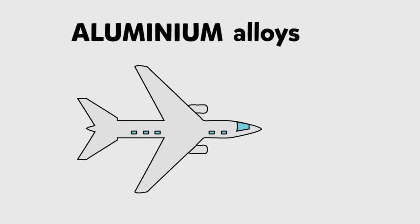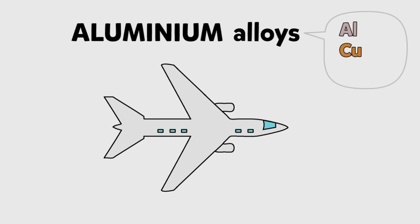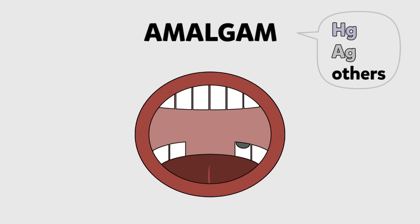Aluminium alloys for planes contain a few percent of copper or other metals. Amalgam is mercury with silver and other metals once used for dental fillings.